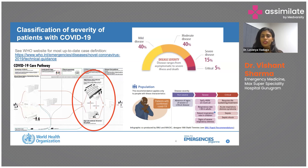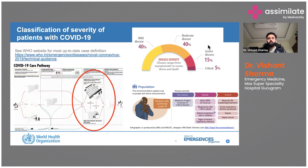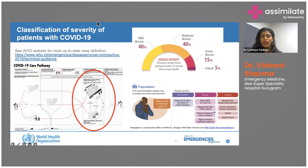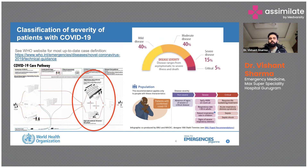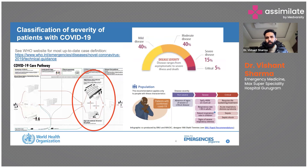Please post answers in the chat box — how do you categorize patients? We have an answer from Dr. Pranita: depending upon symptoms and CT score. Yes, that can be one approach. But let's start from step one — a patient comes to you in an emergency, you don't know anything yet. They say they have cold symptoms and are feeling feverish. What do you do primarily?